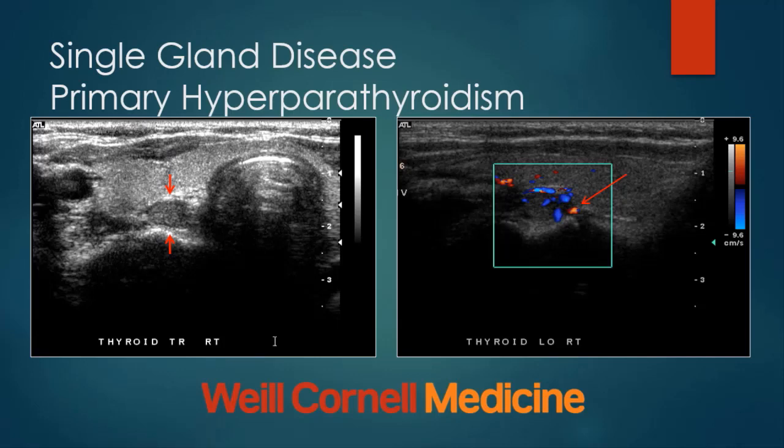This patient with single glandular disease and primary hyperparathyroidism: a hypoechoic lesion just behind the thyroid — turn on the Doppler and there is the polar artery — high positive predictive value for a single parathyroid adenoma.